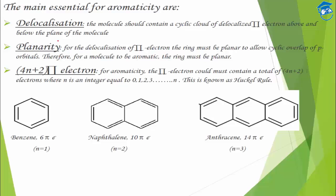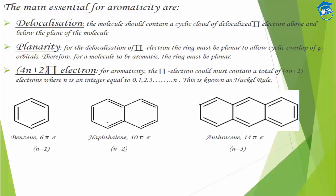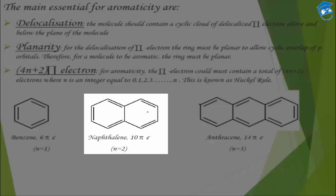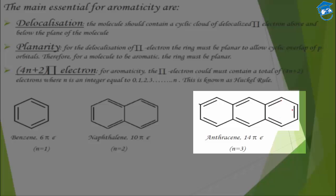Let's check examples. Benzene: it has delocalization with alternate sigma–pi bonds, it is planar, and it has 6 pi electrons. With n=1, 4(1)+2 = 6 — satisfies Hückel's rule, so benzene is aromatic. Naphthalene has 10 pi electrons; with n=2, 4(2)+2 = 10 — planar, delocalized, so it is also aromatic. Anthracene has 14 pi electrons; with n=3, 4(3)+2 = 14 — cyclic, planar, conjugated, and 4n+2 pi electrons, so it is aromatic.